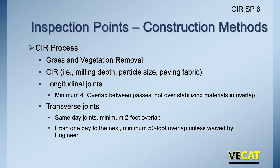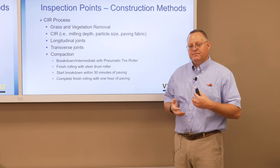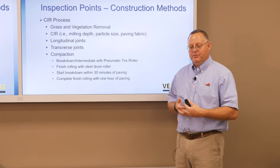For compaction, breakdown and intermediate rolling is done with a pneumatic tire roller — that kneading action helps consolidate the material. Finish rolling is done with a steel drum for a smooth, uniform surface. Breakdown compaction must start within 30 minutes of paving — we don't want the material to dry out before density is achieved — and the entire compaction process must be completed within one hour.